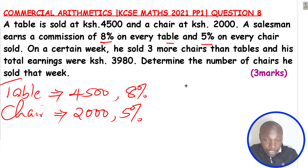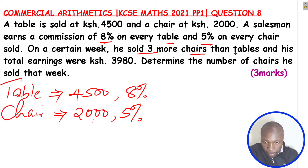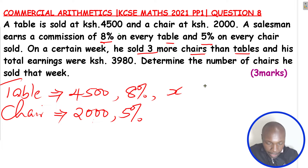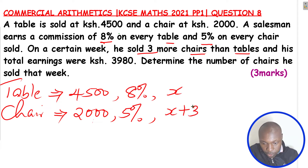There is other important information here. On a certain week, he sold three more chairs than tables. Since we don't know the number of chairs or tables, we can let the number of tables be represented by x. If the number of tables is x and he sold three more chairs than tables, then the number of chairs will be x plus 3.